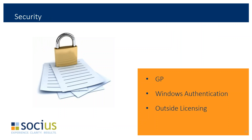When we talk about security, we've broken it down to three levels. One is GP — your GP login gives you security to many tools inside and outside of GP. Then Windows authentication — the login you use every day when you sit down at your computer — can also authenticate you to different reporting tools. And finally, outside licensing, for services like the Power BI service or any cloud-based tools where you do a separate login outside your network.